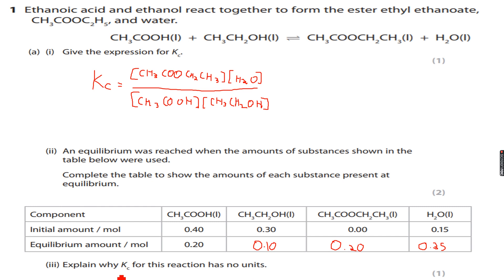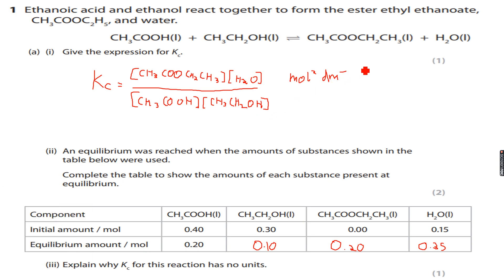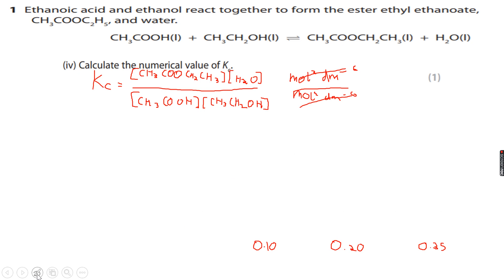Now it says explain why Kc for this reaction has no units. Looking at the expression for Kc, all concentrations are in mol per dm³. When I multiply the two numerator terms I get mol² dm⁻⁶, and similarly the two denominator terms give mol² dm⁻⁶. These cancel out, so the numerator units and denominator units cancel, and therefore the value of Kc has no units.